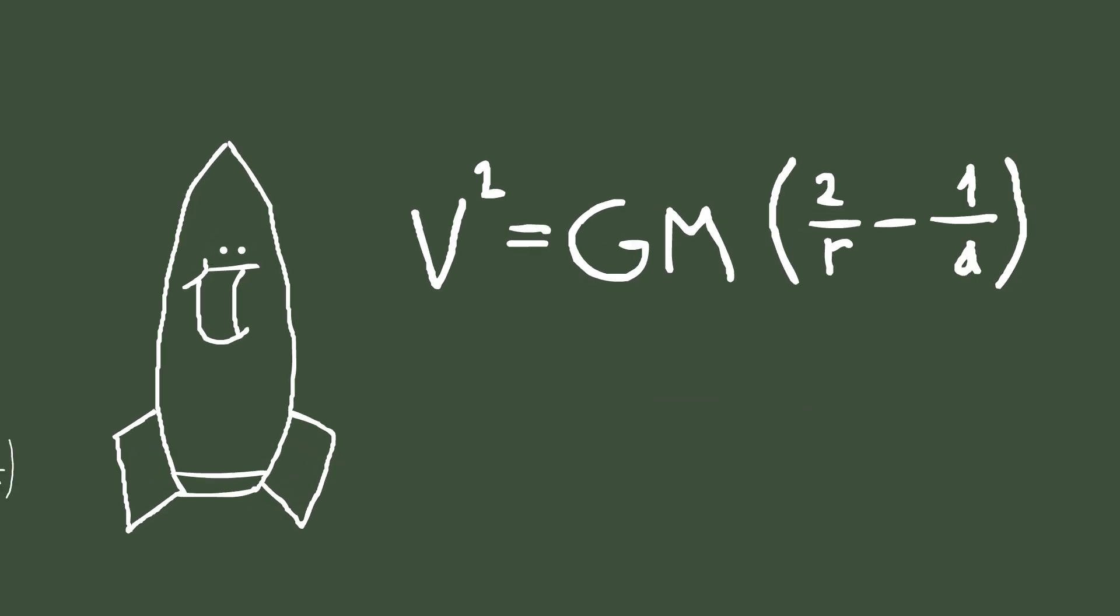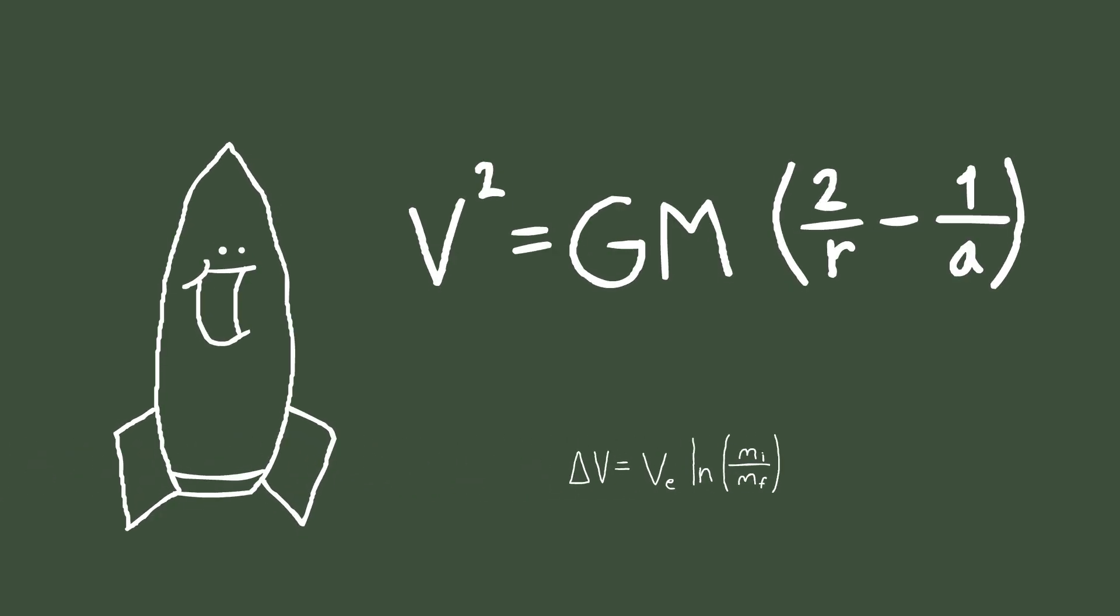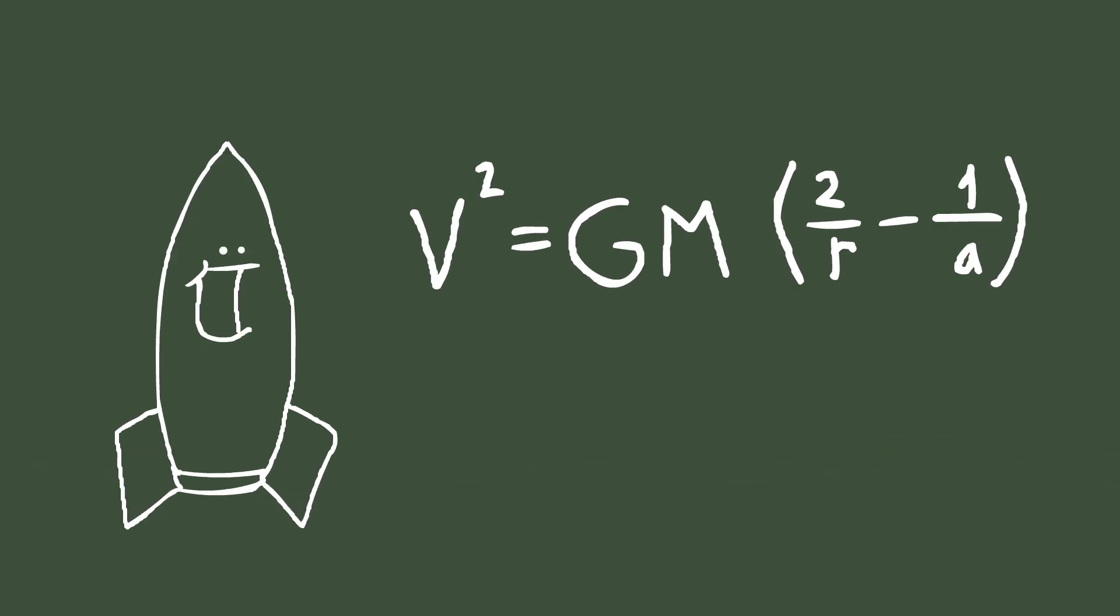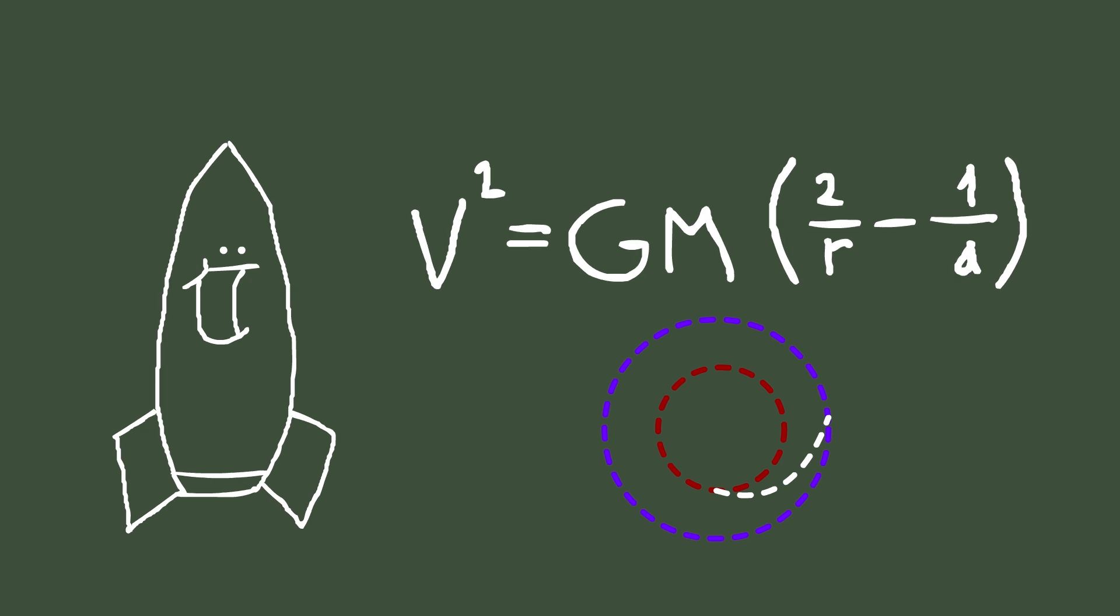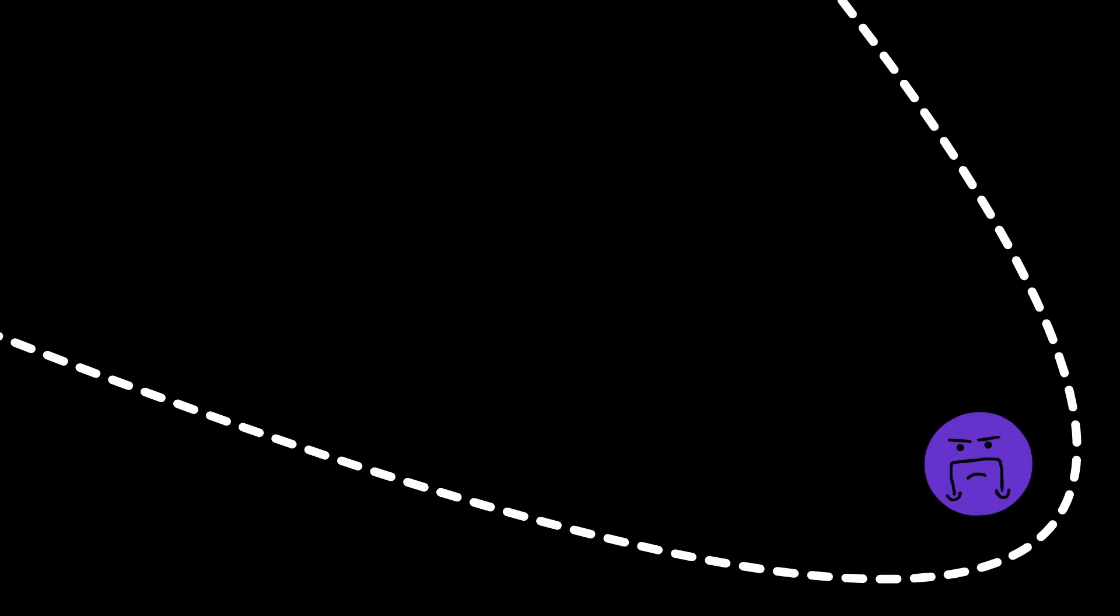Using this equation and the rocket equation, which is for another video, you can find out what orbits you can achieve with a rocket and how much change in velocity or acceleration is required for each change in your orbit.